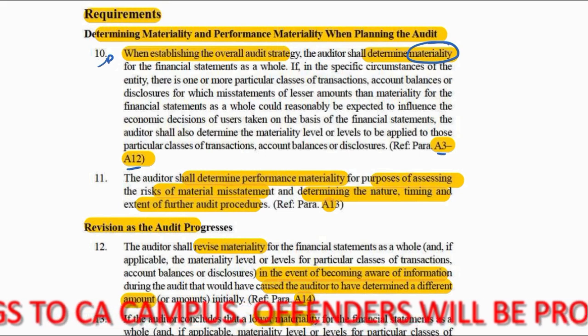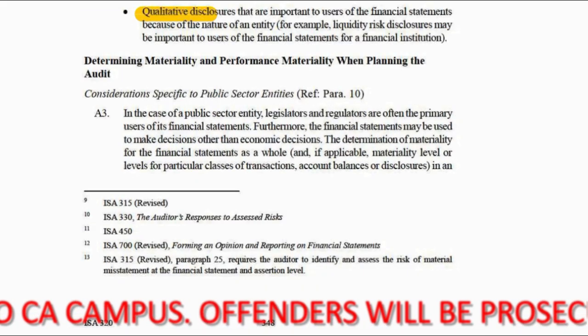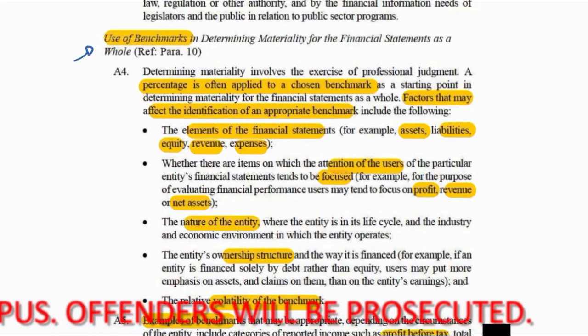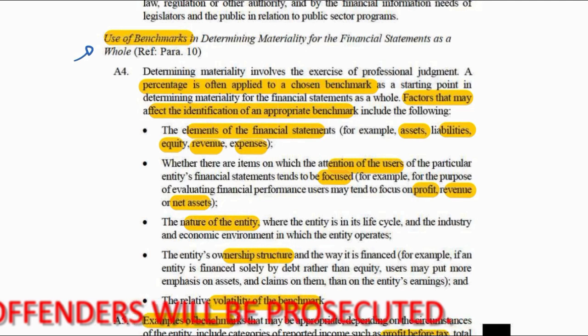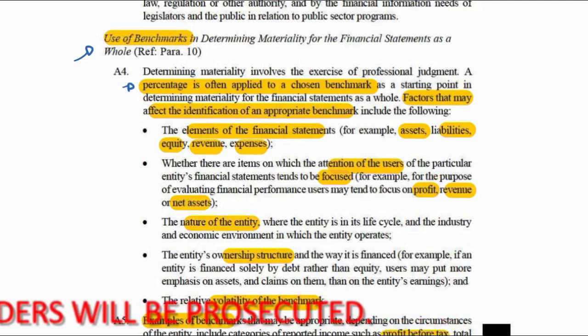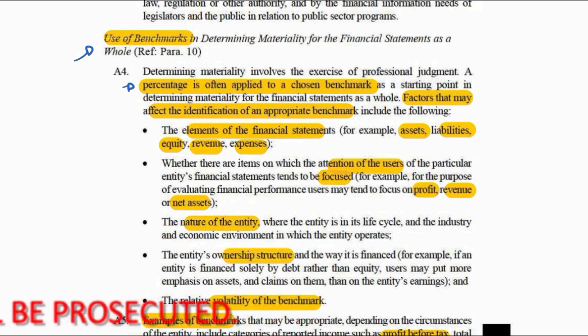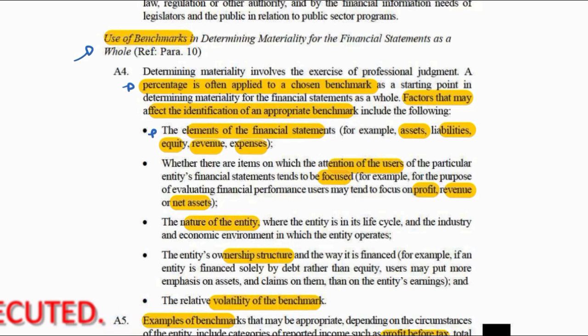A3 to A12 give us some information about that. A3 and A4 discuss the use of benchmarks — we need to apply a percentage to a chosen benchmark. Here are some factors we consider in choosing our benchmark. First, they explain what the elements in the financial statements are: assets, liabilities, equity, revenue, and expenses — those are literally the full categories in your statement of comprehensive income and statement of financial position.